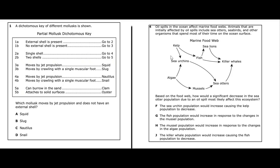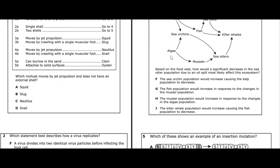The other answer choices are incorrect. G — fish population increasing in response to mussel population changes doesn't hold because fish and mussels don't have that direct relationship. H — mussel population increasing due to algae changes is wrong because algae is actually decreasing as sea urchin populations rise. J — killer whale population increasing and causing fish to decrease doesn't make sense because sea otters decreasing would actually lead to some killer whales starving. The answer is F.